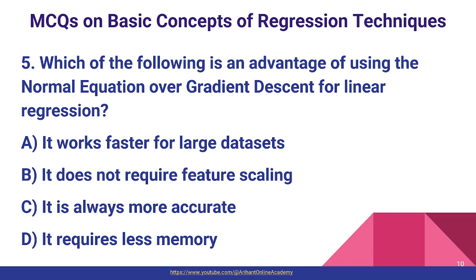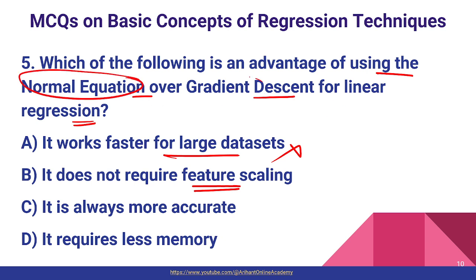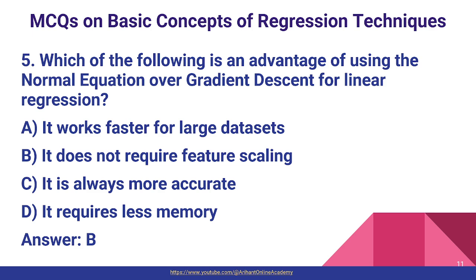Question number five: which of the following is an advantage of using the normal equation over gradient descent for linear regression? Option A: it works faster for larger datasets. Option B: it does not require feature scaling. The advantage of using the normal equation over gradient descent is that it does not require feature scaling, so option B is the correct answer.